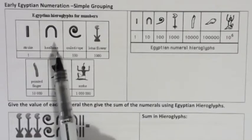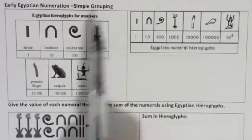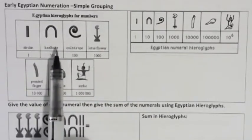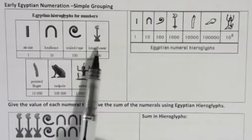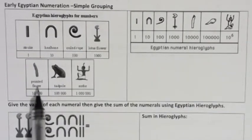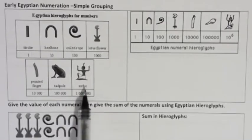And they're grouped together, which is why it's called a simple grouping. So we have what we call a stroke, a heel bone, a coiled rope, a lotus flower, a pointed finger, a tadpole, and a scribe.